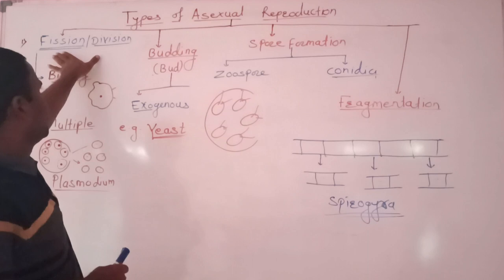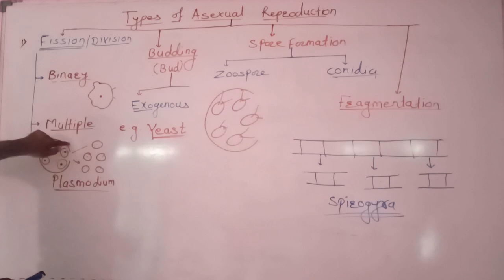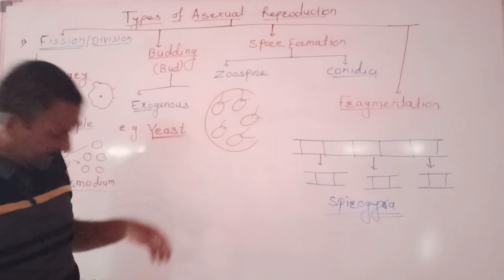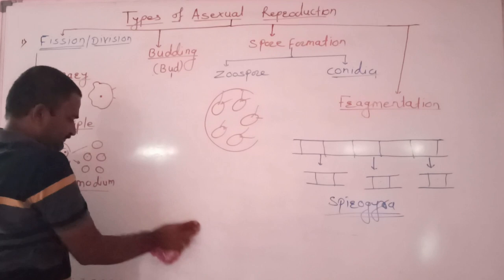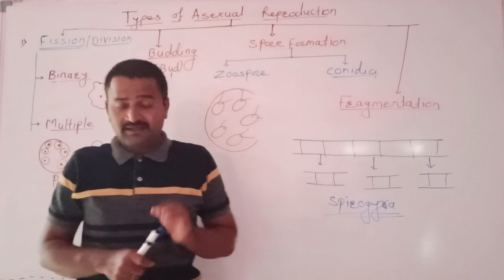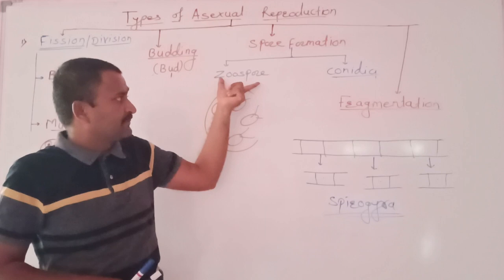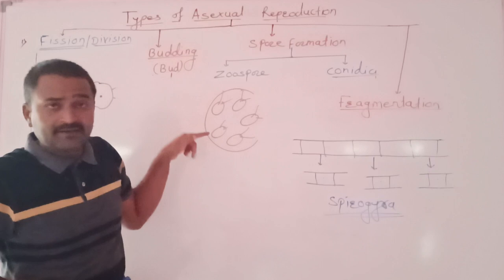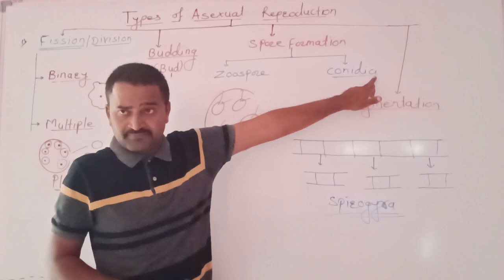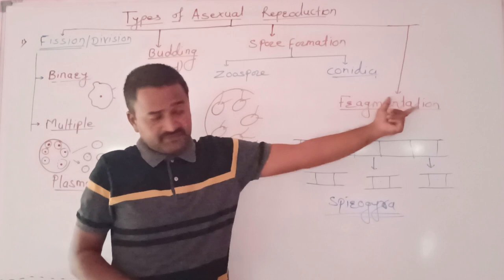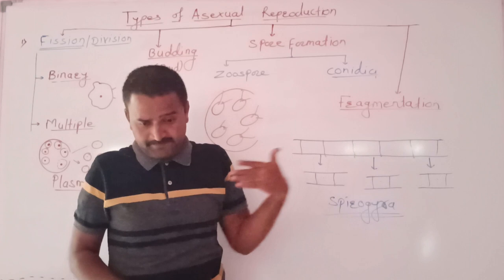This is the fourth type of reproduction. Fission means division, binary and multiple fission. Examples are amoeba, paramecium for binary, plasmodium for multiple. Then budding, two types, exogenous and endogenous. Exogenous bud examples are yeast and hydra. Endogenous buds called gemmules, example spongilla. Then spore formation, two types of spores, zoospores and conidia. Zoospores are motile, conidia are non-motile. Zoospores example chlamydomonas, conidia example penicillium. And then the fourth method of asexual reproduction is fragmentation, example filamentous alga called spirogyra.